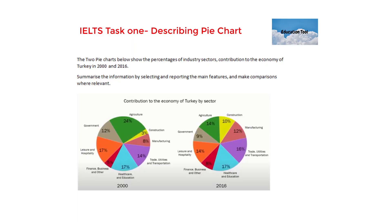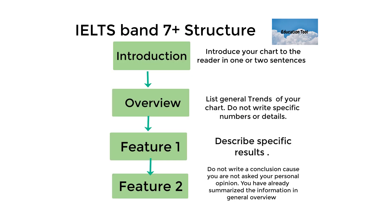In IELTS writing task one, you have been asked to describe two charts. The two charts show the percentage of industry sectors' contribution to the economy of Turkey in 2000 and 2016. You have been asked to summarize the information by selecting and reporting the main features and making comparisons between the two charts.